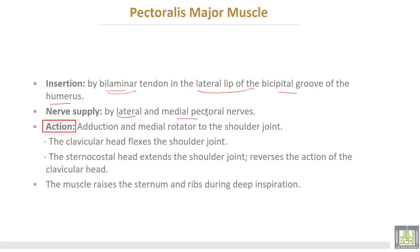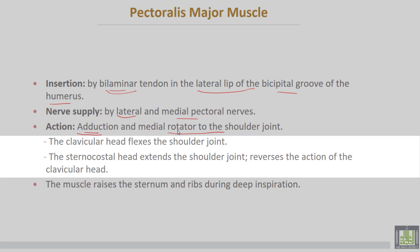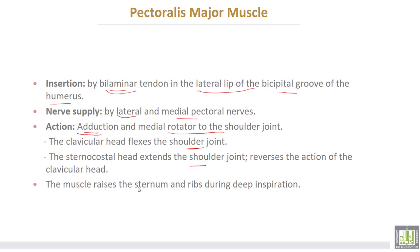Action of the pectoralis major muscle: number one, adduction of the humerus and medial rotation of the shoulder joint. The clavicular head flexes the shoulder joint, but the sternocostal head extends the shoulder joint, reversing the action of the clavicular head. The muscle also raises the sternum and ribs during deep inspiration, so it can be considered one of the accessory muscles of respiration.